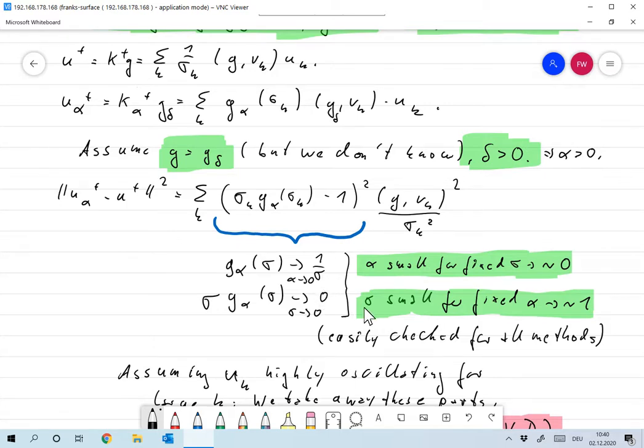What does that mean? You can easily check for all our methods that for a fixed alpha and sigma relatively large, this will be very close to one. The whole term will be around zero. On the other hand if alpha is fixed but sigma is very small, this will be on the order of zero so the whole term will be on the order of one.